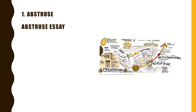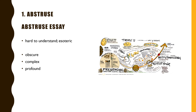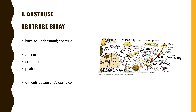First word is abstruse — an abstruse essay. That means hard to understand and esoteric, meaning the material itself is genuinely difficult. Some similar words are obscure, complex, or profound. So it's not just a report that's badly written; it really is well written for that particular topic, and it's difficult because it is very complex.